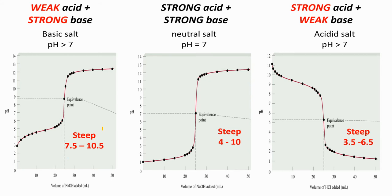Now I will show again these three titration curves. If we have weak acid and strong base, we will have a basic salt with pH more than 7, so the steep is 7.5 to 10.5. If we have strong acid and strong base, we will have a neutral salt with pH equal to 7, and the steep is 4 to 10. And if we have strong acid and weak base, we will have an acidic salt with a steep of 3.5 to 6.5.